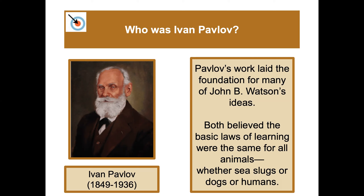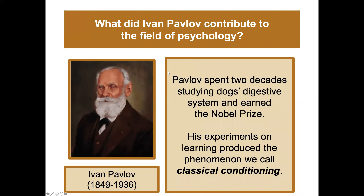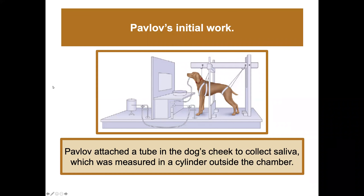Whether sea slugs, dogs, or humans, they thought there were fundamental basic principles of learning that could be applied across different species. Pavlov spent two decades studying dogs' digestive systems and actually earned a Nobel Prize. His experiments on learning produced the phenomenon we call classical conditioning — starting from research in dog physiology, he ended up discovering this foundational principle of learning.